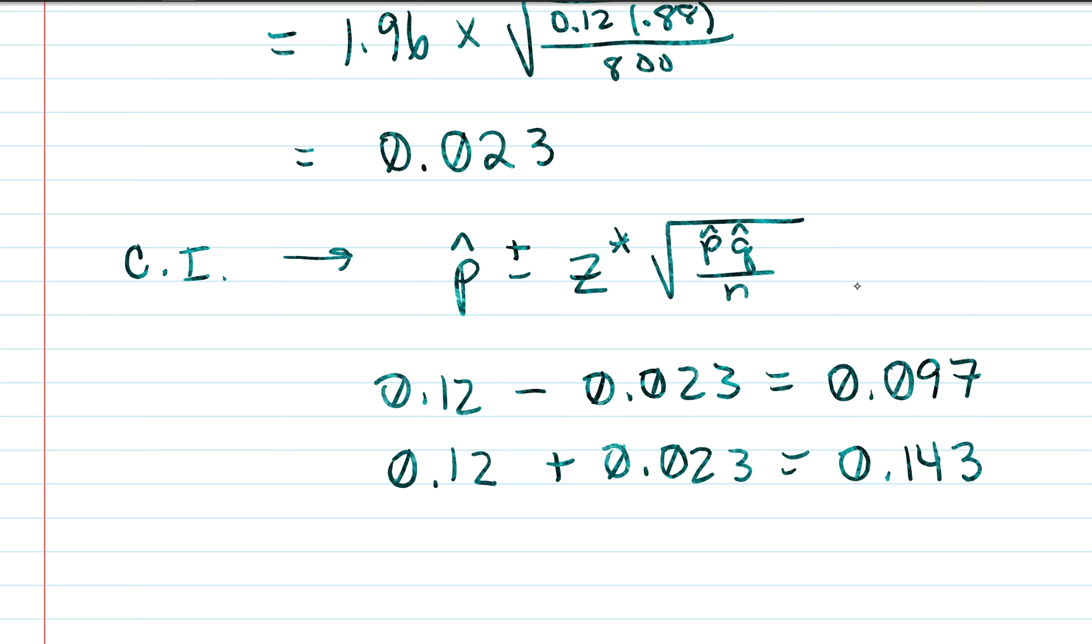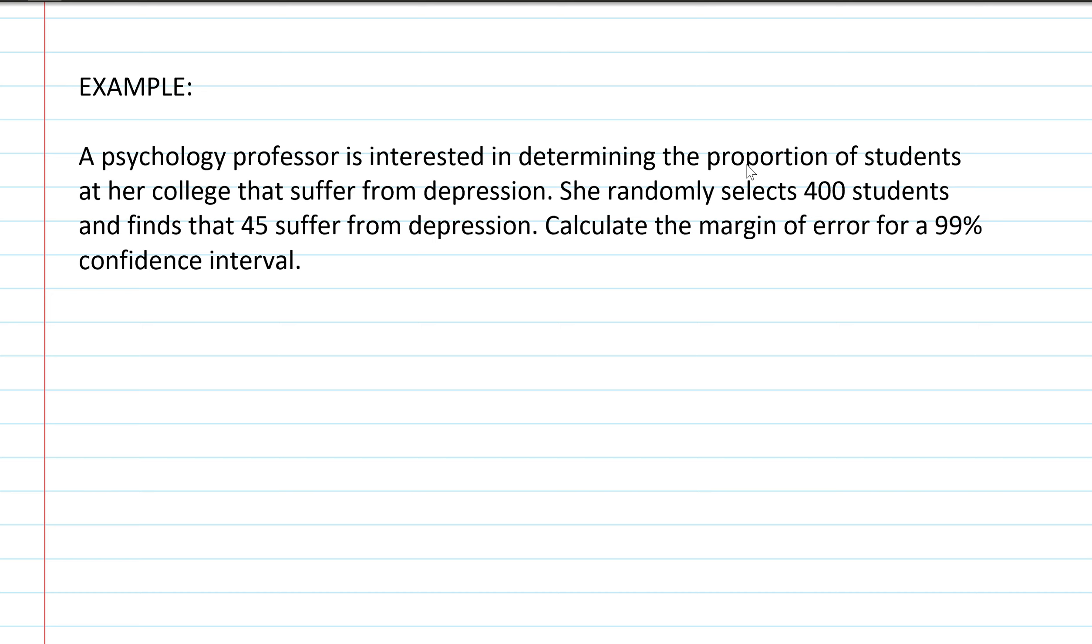All right so here's the confidence interval and basically from this we can say that we are 95 percent confident that proportion of all college age students that are obese is between 0.097 and 0.143.